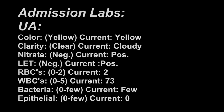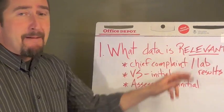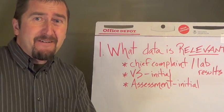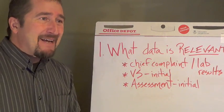Our admission labs, the urinalysis is done. The color is yellow, clarity is cloudy, nitrates are positive, leukocyte esterase is positive, white cells are 73. Based on what we just discussed, what's relevant in that UA that must be recognized by the nurse? It's obvious we have clear indications for a positive urinary tract infection.